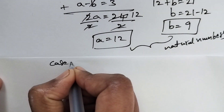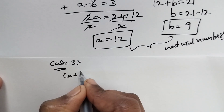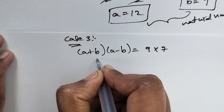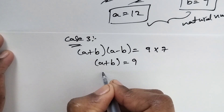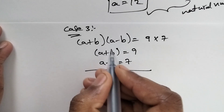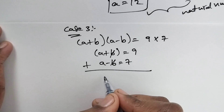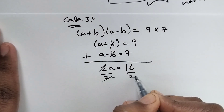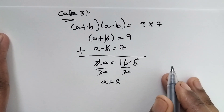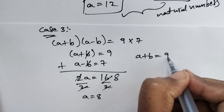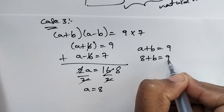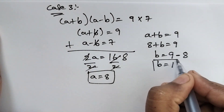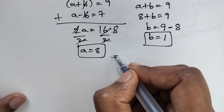Case 3: (a plus b)(a minus b) equals 9 times 7. Splitting: a plus b equals 9, and a minus b equals 7. Adding these equations, 2a equals 16, so a equals 8. Substituting into a plus b equals 9: b equals 9 minus 8, so b equals 1. These are also real numbers.